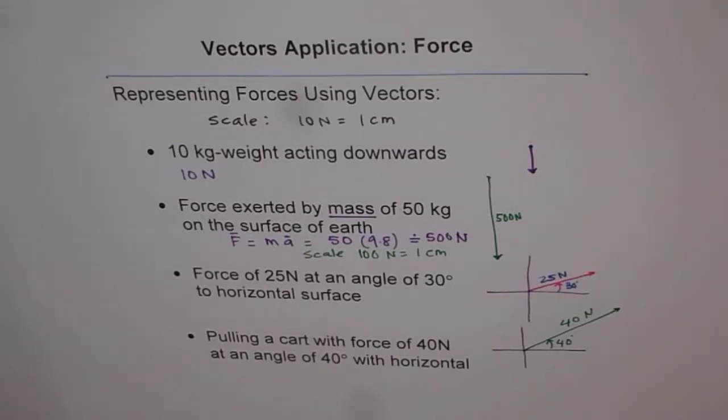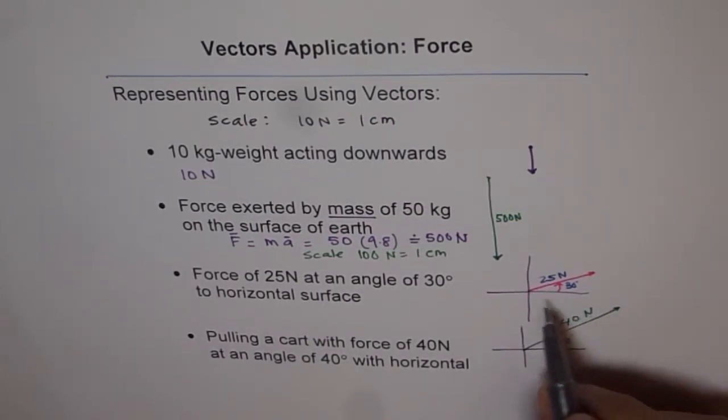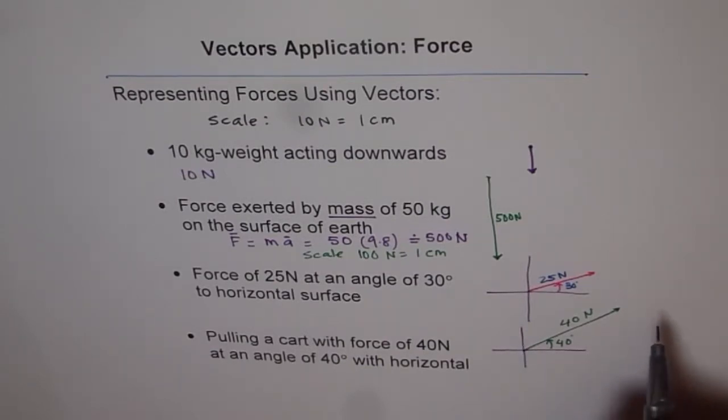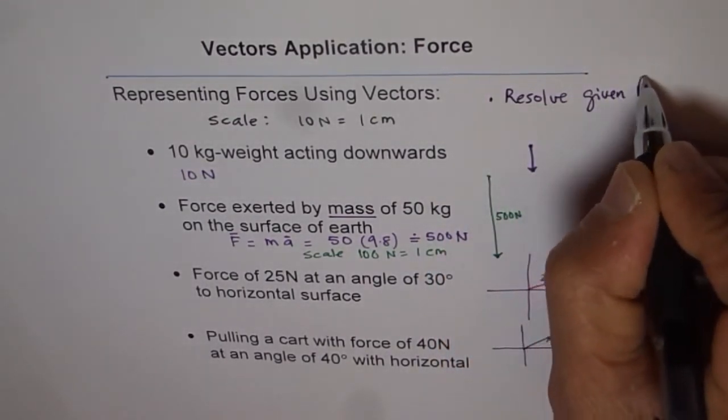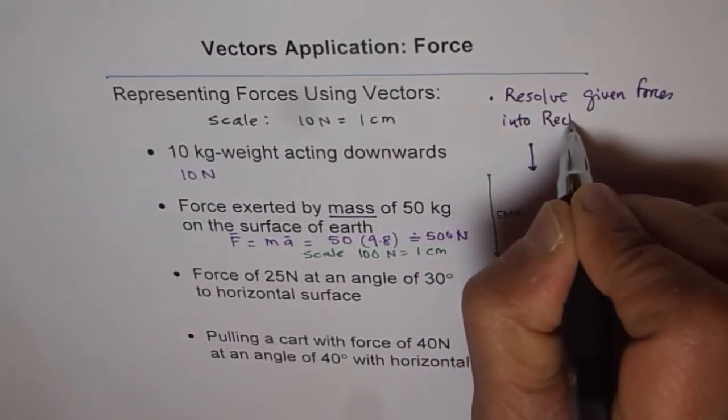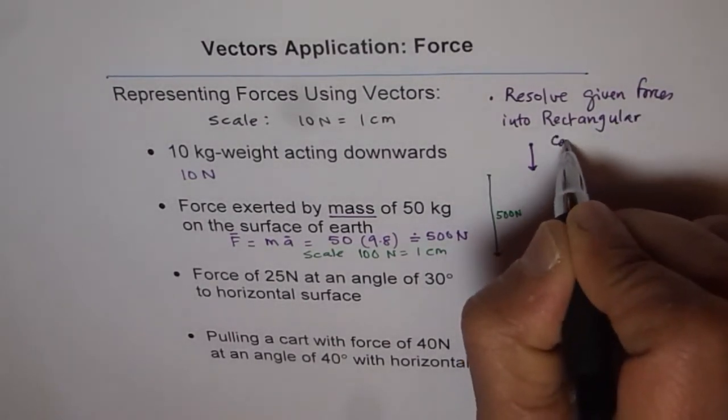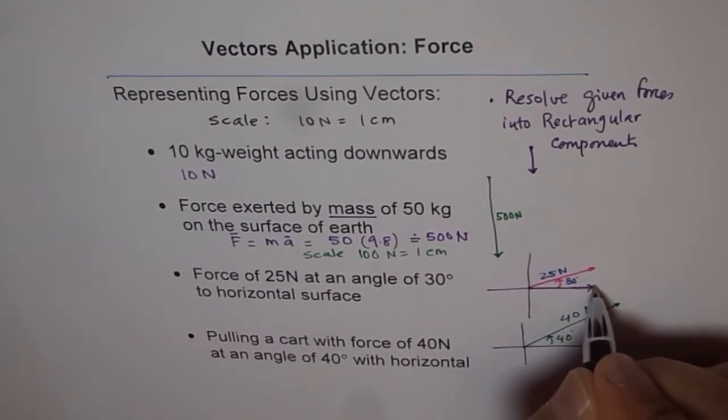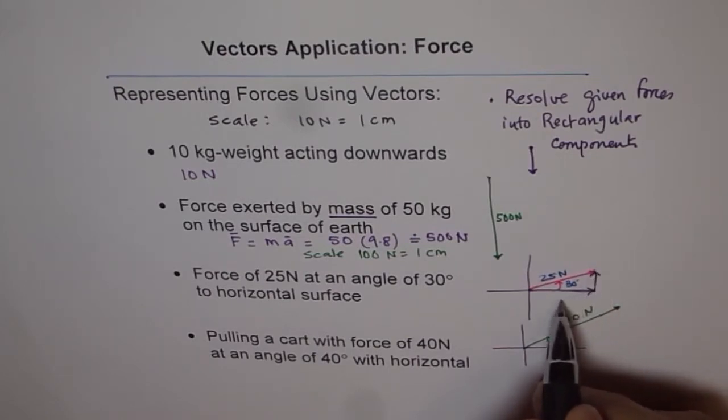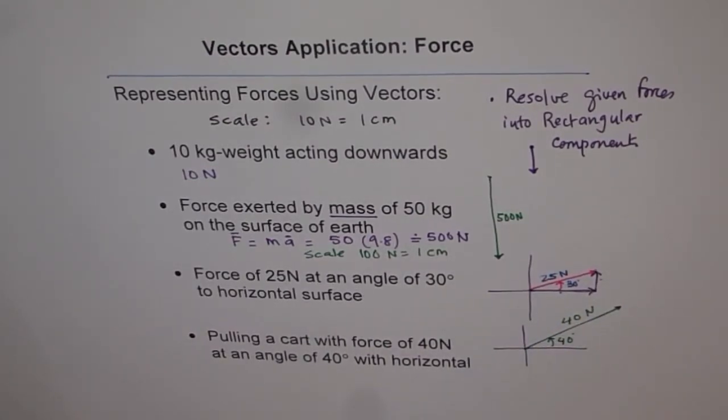So like this, you can draw your diagrams. As an added exercise, you can resolve all these forces in their X and Y components, which we call rectangular components. Your problem now is to resolve given forces into rectangular components. When we say rectangular components, that means like this - this is your horizontal component and that's your vertical. You can always find the magnitude of these components with the help of trigonometric ratios. That will be cosine of angle and this is sine of angle. That is how you can do it, and that will give you some practice getting started with vectors application to force. Thank you.